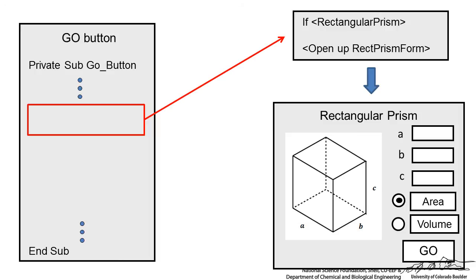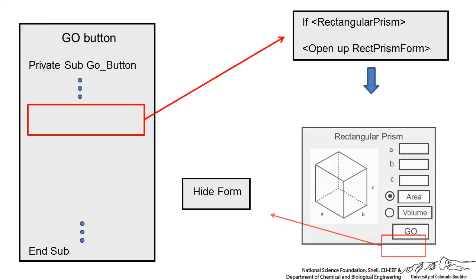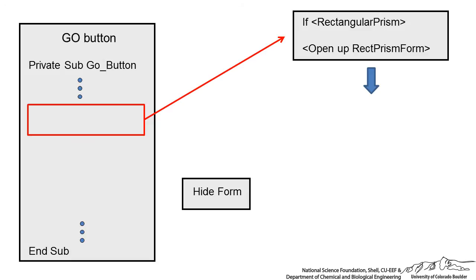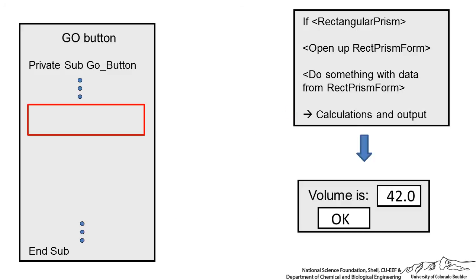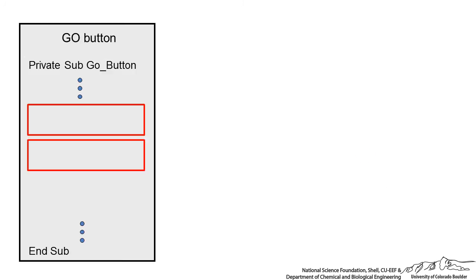We want the user to input A, B, and C, select either area or volume, and press Go. When they press Go, initially we want to hide the form. When you hide a form in VBA, it actually goes back to where you called or opened that user form. Once the code has done the calculations, it's going to export that in an output box. In addition to the rectangular prism, we're going to have three others.